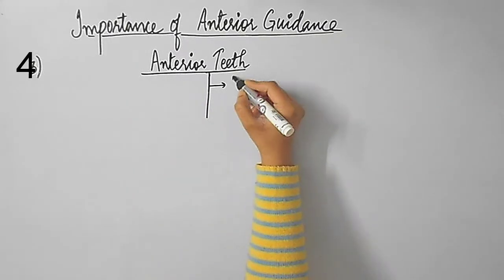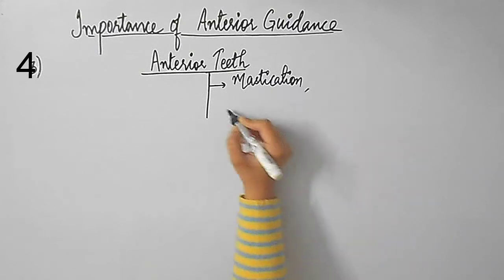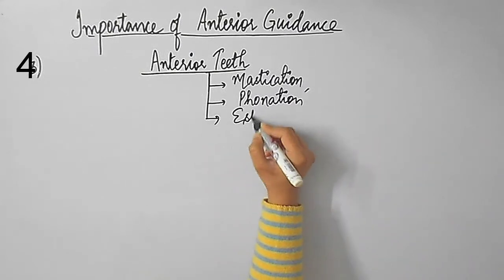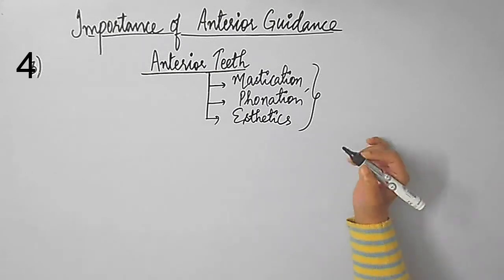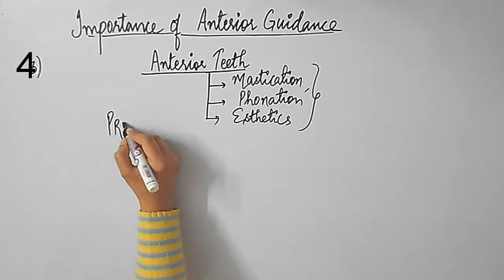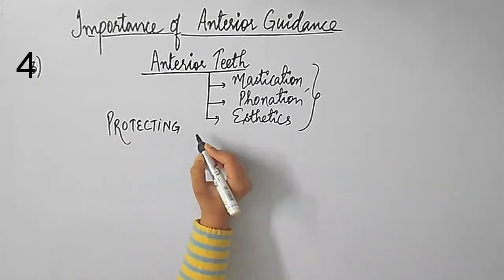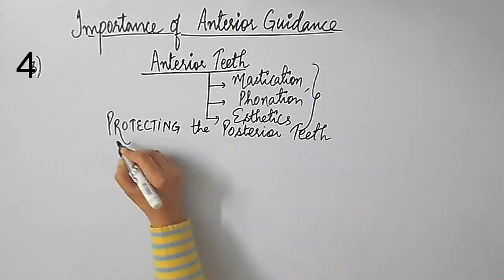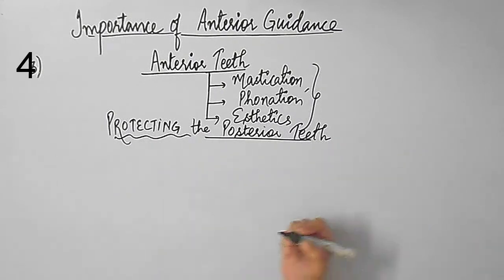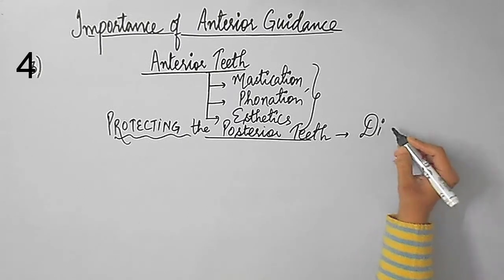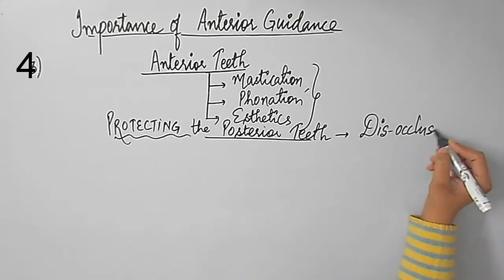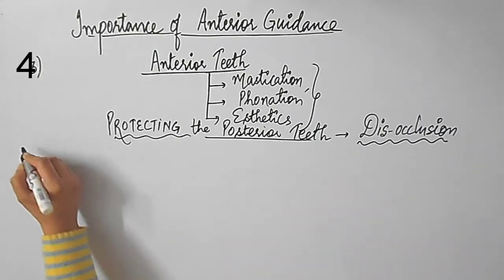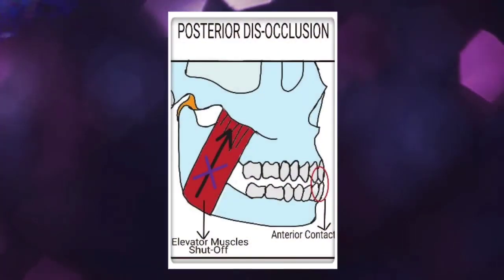Before attempting to restore the anterior teeth, every dentist should know that besides aiding in mastication, phonation, and aesthetics, the anterior teeth also play a key role in protecting the posterior teeth. The way the anterior teeth protect the posterior teeth is through the process called posterior disclusion.